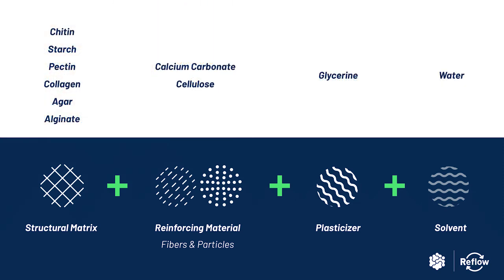If we categorise some of the mentioned biopolymers by role, we can find some examples here. For the matrix role, we can use chitin, starch, gelatin, pectin from fruits and vegetables, and algae-based biopolymers such as agar, alginate or carrageenan. Then, for reinforcing, some examples are cellulose and calcium, which can be easily sourced from eggshells or mussel shells. And finally, we have water and glycerin — this last one can be sourced from both plants and animals.